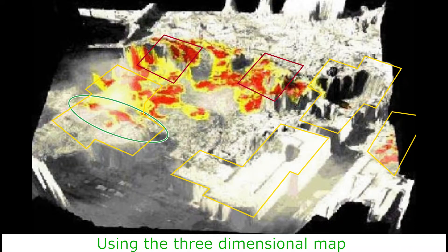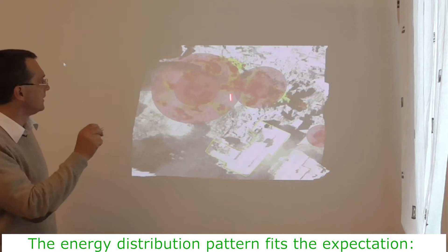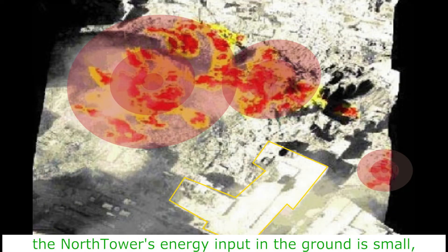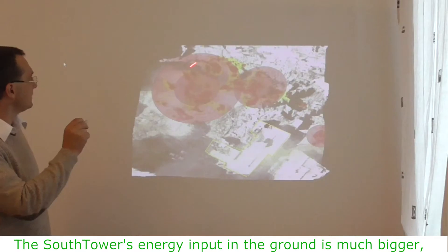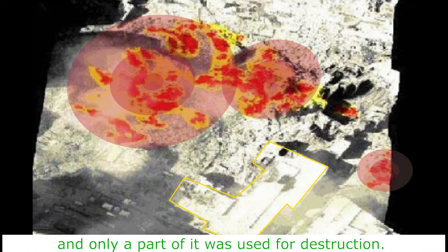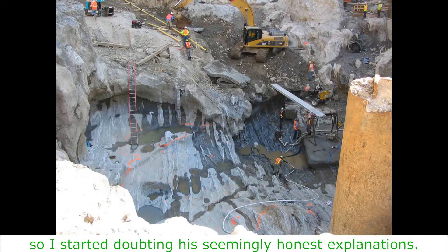Using the three-dimensional map provided by the 9-11 Encyclopedia, we can create an overlay with the expected affected area. The energy distribution pattern fits the expectation. The North Tower's energy input in the ground is small, as much of the energy was efficiently used to obliterate the tower. The South Tower's energy input in the ground is much bigger, and only a part of it was used for destruction. Silverstein's Valley is within the affected area, so I started doubting his seemingly honest explanations.